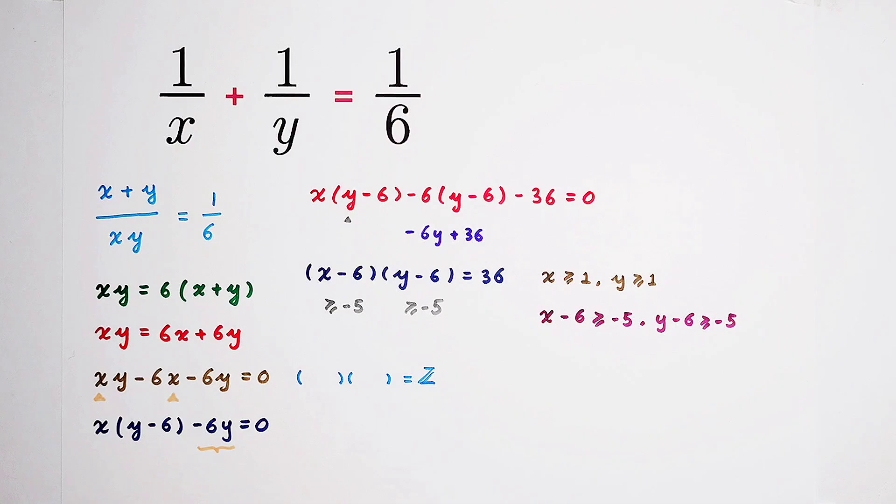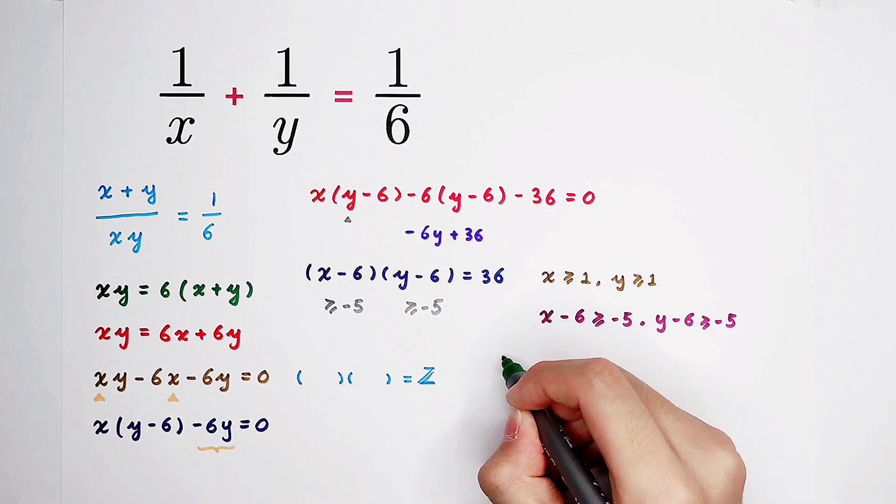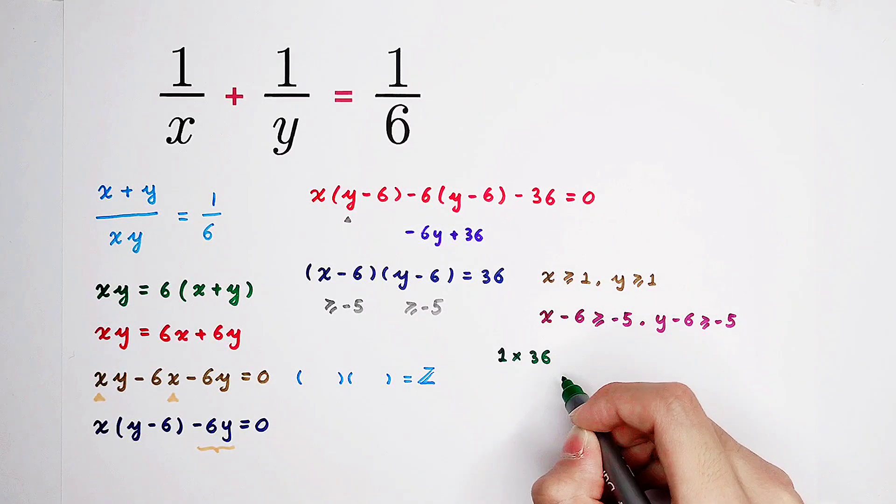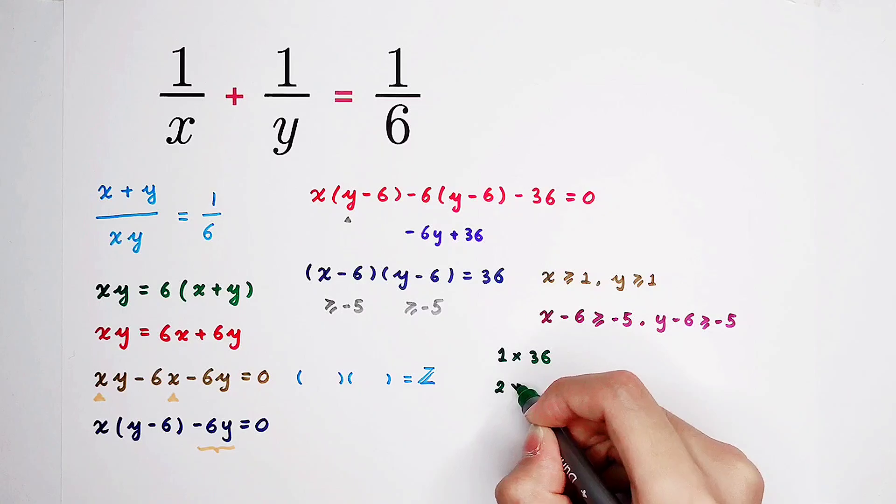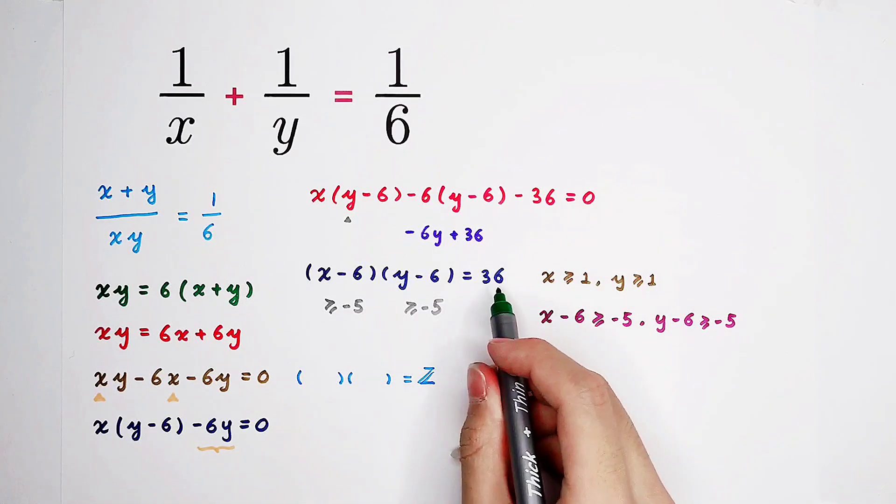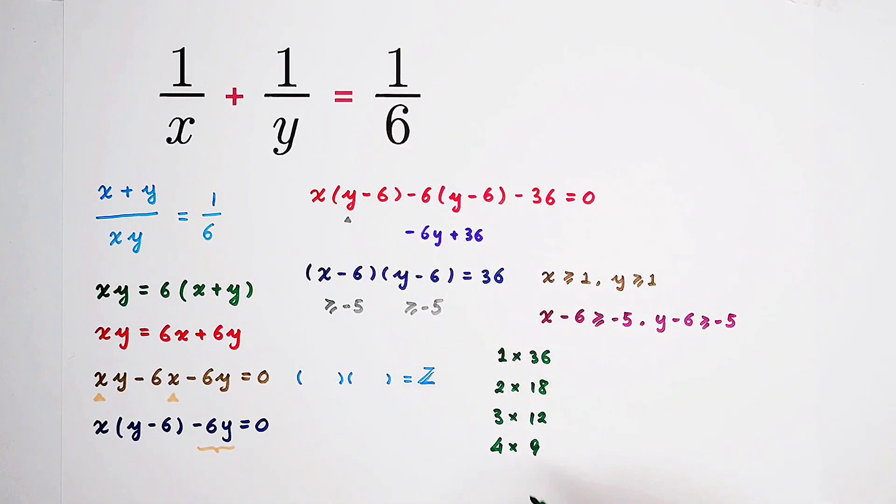Then, let's go. How many possibilities are there? Have a look. 1 times 36. Or 2 times 18. 3 times 12. 4 times 9. 5 times nothing because 36 is not divisible by 5. Then 6 times 6. 6 squared.